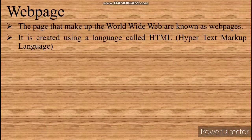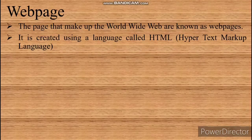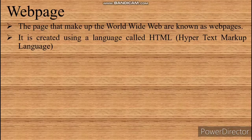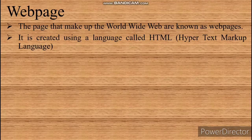A web page is created using Hypertext Markup Language. A web page can contain images, text, audio, video, and links to other pages. These links are called hyperlinks. A hyperlink is a link through which you can jump to the next web page or a new section within the same web page.